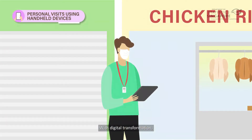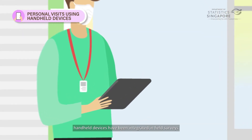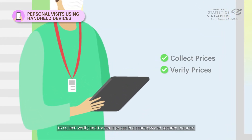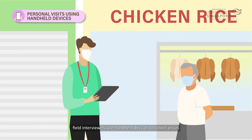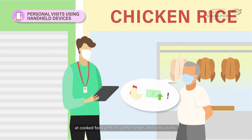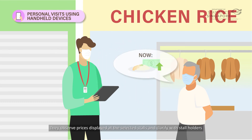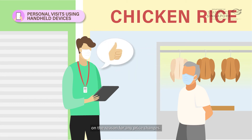With digital transformation, handheld devices have been integrated in field surveys to collect, verify, and transmit prices in a seamless and secure manner. For example, field interviewers use handheld devices to collect prices at cooked food centers, coffee shops, and food courts. They observe prices displayed at the selected stores and clarify with storeholders on the reason for any price changes.